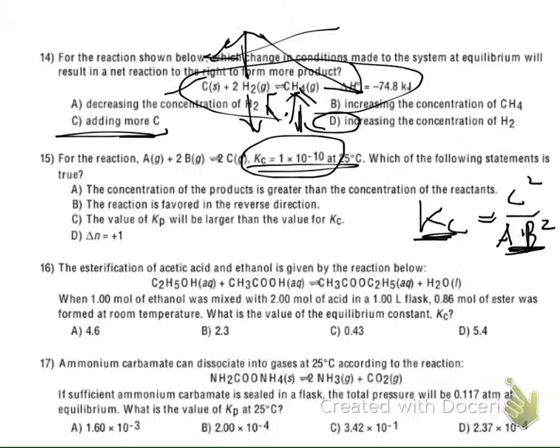Option B: the reaction is favored in the reverse direction. The chemical reaction is going to shift from right to left in order to produce more reactant. We don't know the exact concentration values, but comparing product and reactant concentrations, we know the reaction is favored to the reverse side. So the answer is B.